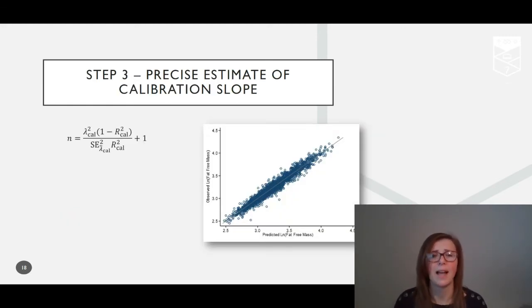To ensure the precise estimate of the calibration slope, we need to choose values for the anticipated C-slope in the new data, its standard error, and R-squared cal. As mentioned previously, let us assume good calibration such that the calibration slope is 1. This is not a wild assumption, as you can see from the calibration plot on internal validation—calibration looks pretty good. In this case, R-squared cal would equal R-squared val, so we can take the value of R-squared using the previous steps.